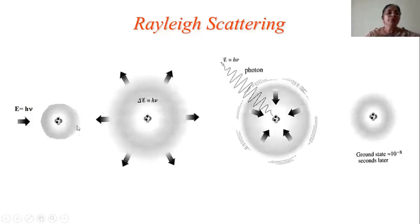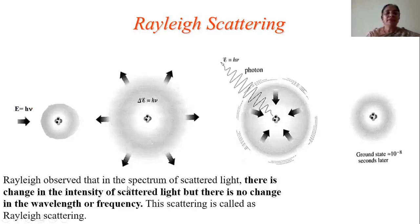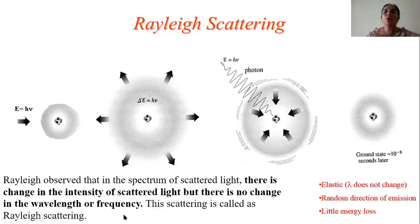Let us consider a molecule. A light photon of energy h-nu is impinging on this molecule. The molecule absorbs this energy and goes to an excited state, then returns to the normal state by giving out the absorbed energy. So there is no change in the energy of the molecule. Because there is no change in energy, there is no change in the frequency of the spectrum observed. Rayleigh observed that in the spectrum of scattered light, there is a change in intensity but no change in wavelength or frequency. This scattering is called Rayleigh scattering.